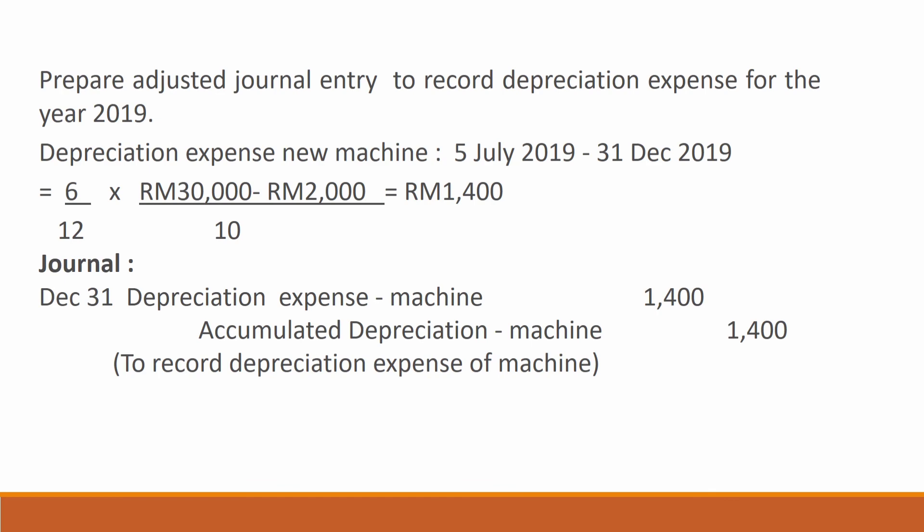Now we prepare the adjusted journal entry to record depreciation expense for the year 2019. We calculate depreciation for the new machine from the 5th of July 2019 to the 31st of December 2019: 6/12 × (30,000 − 2,000) ÷ 10 years = RM1,400. The adjusted journal entry is: debit depreciation expense and credit accumulated depreciation for machine RM1,400, to record depreciation expense of the machine.